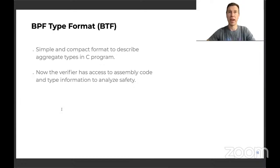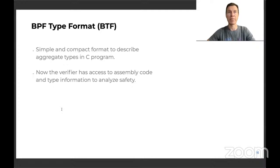After many years of gradually improving the verifier's smartness, we hit the point where every small improvement means a lot of lines of code. It's challenging because the verifier has to rely on the assembly code alone. The breakthrough came with type information. BPF Type Format (BTF) was invented to describe types of functions and variables — a simple format that encodes struct names, fields and sizes, function names and prototypes, and aggregate types of the C language. Now the verifier has the assembly code and types at its disposal to prove safety.